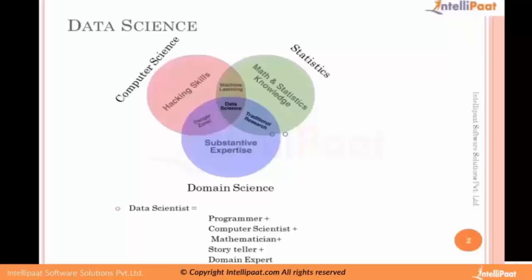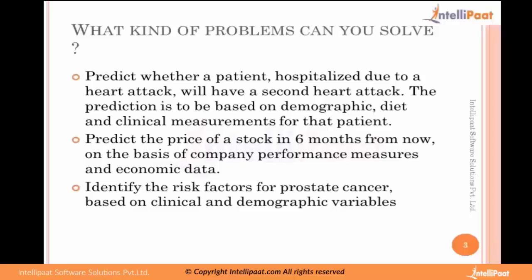What kind of problems can you solve? For example, predict whether a patient hospitalized due to a heart attack will have a second heart attack, or what time he will come to the hospital — this is a prediction problem. In data science, we go through data because we want to understand patterns. If a person is 50 years old, there is a high probability he will visit the hospital, because as a person grows and crosses 50, there is a high probability of health problems. This is a simple pattern found from experience — but how do I find it from the data? That's what data science helps you do.